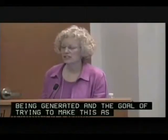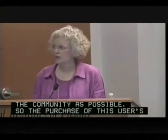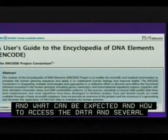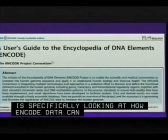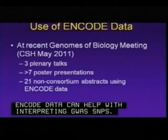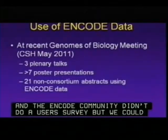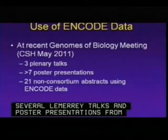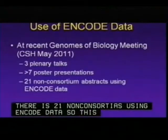The purpose of this user's guide was to explain what data is currently available, what data the community can expect to see, how to access the data, and provide examples of using the data — including how ENCODE data can help with interpreting GWAS SNPs. As a measure of community use, at a recent Cold Spring Harbor meeting on Genomes and Biology, there were 21 non-consortial abstracts using ENCODE data, which is quite encouraging.